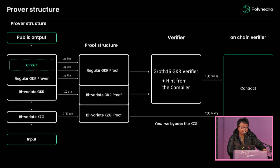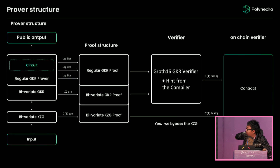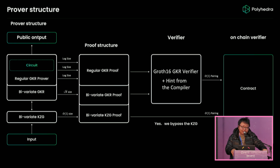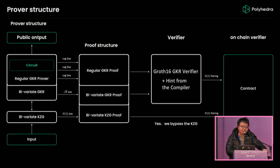Here is the overall structure of the prover — there's the prover in the middle, a proof structure, and a verifier on the other side. The end-to-end experience is: you write a circuit program, execute it on our prover, and finally verify the proof on the Ethereum chain. That's never been done before at this scale — we can verify a billion-size circuit on-chain.